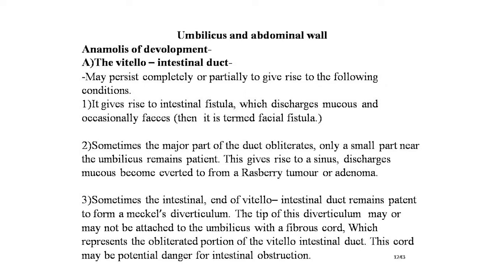Anomalies of development — first, the vitello-intestinal duct may persist completely or partially. If completely patent, it gives rise to an intestinal fistula discharging mucus and occasionally feces, termed a fecal fistula. Second, if only a small part near the umbilicus remains patent, a sinus forms that discharges mucus and may invert to form a raspberry tumor or adenoma. Third, if the intestinal end remains patent, it forms a Meckel's diverticulum, whose tip may be attached to the umbilicus by a fibrous cord — a potential cause of intestinal obstruction.